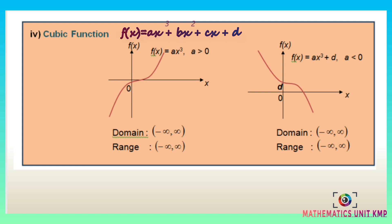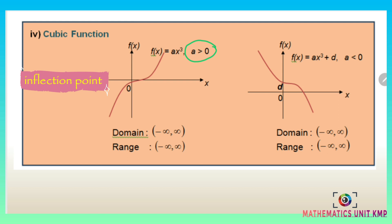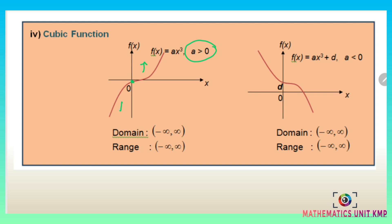If f(x) equals ax³ and a is greater than 0, the inflection point is at (0, 0). At the right, the graph is concave up and at the left it is concave down.